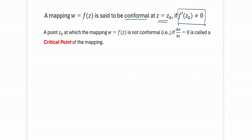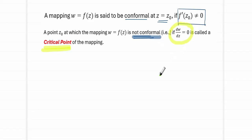If the derivative does not exist or equals zero at a point, the mapping is not conformal there. Such a point is referred to as a critical point of the mapping. A critical point of a transformation is obtained by the condition dw/dz = 0. That is, if the derivative happens to be equal to zero, we say the mapping is not conformal at that particular point. We will see some examples to find the critical points of a transformation.